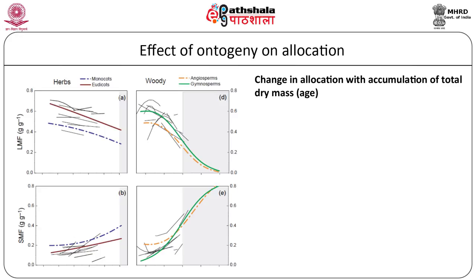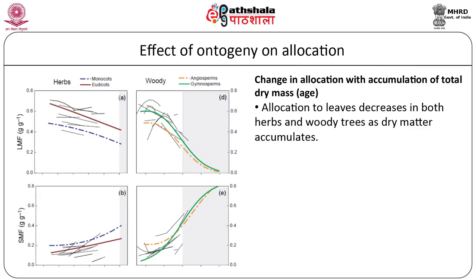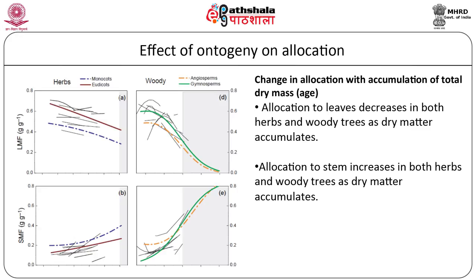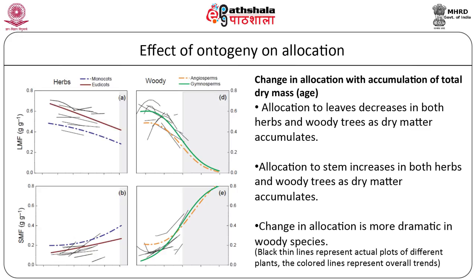Besides environmental conditions, allocation also changes depending on plant ontogeny. Ontogeny of a plant refers to distinct phases like embryogenesis, germination, vegetative development, flowering, etc. As the plants grow, there is an increase in biomass which is reallocated to different organs during these distinct developmental phases. Since ontogeny can be presented as a function of plant growth or development, it has a strong effect on allocation patterns. For example, in herbaceous plants there is a decrease in allocation to leaves and an increase in allocation to stem as the plant grows. In woody trees, this shift in allocation is more dramatic with a sharp decrease in leaf mass fraction and a sharp increase in stem mass fraction.